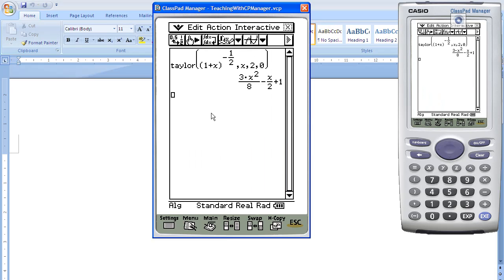So it tells me the first three terms is actually 3x squared over 8 minus x over 2 plus 1, or 1 minus x over 2 plus 3x squared over 8. You saved your time.